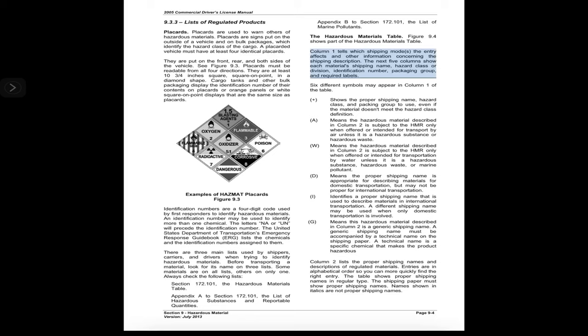The Hazardous Materials Table (figure 9.4) shows part of the table. Column 1 tells which shipping modes the entry affects and other information. The next five columns show each material's shipping name, hazard class or division, identification number, packing group, and required labels. Six different symbols may appear in column 1: the plus (+) symbol shows the proper shipping name, hazard class, and packing group to use even if the material doesn't meet the hazard class definition.